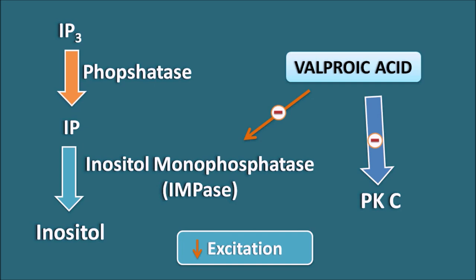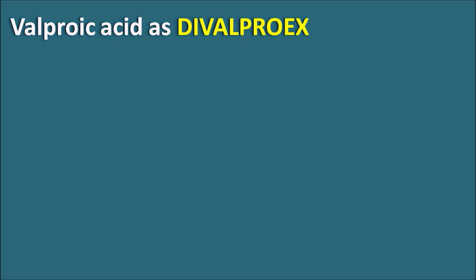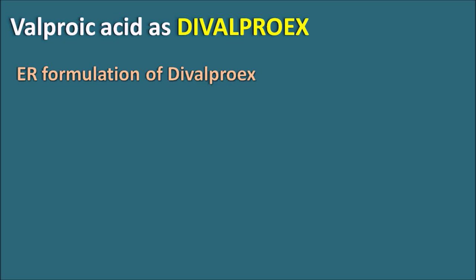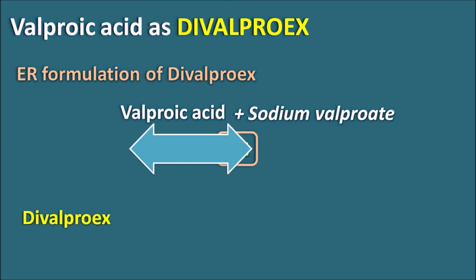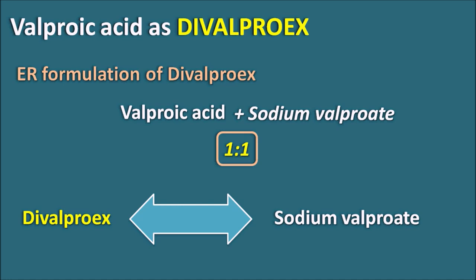Because of all these actions, valproic acid is useful in the treatment of various types of seizures, bipolar depression, and migraine prophylaxis. Valproic acid is also given as divalproex. In the extended-release formulation, divalproex is used — a combination of valproic acid plus sodium valproate in a one-to-one ratio (50% valproic acid and 50% sodium valproate). The two formulations are not equivalent or interchangeable, and divalproex is used to decrease the gastrointestinal side effects of valproic acid.